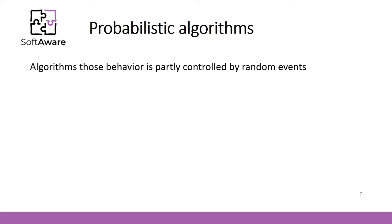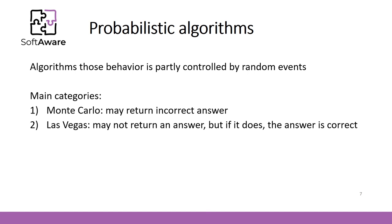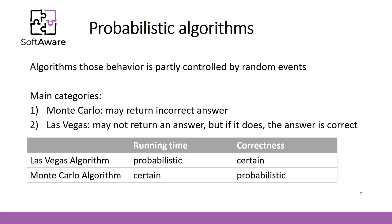There are three main categories of probabilistic algorithms. Monte Carlo algorithms may return an answer that is not correct. Las Vegas algorithms may not return an answer at all, but if they do, the answer is guaranteed to be correct. In this table, you can see that these two types of algorithms are completely different when runtime and correctness are considered. The third group is called Sherwood algorithms, which always give the correct answer. Here we can take quicksort as an example.